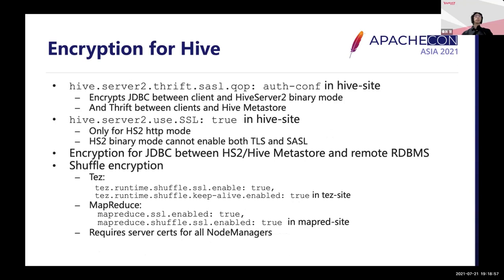Encryption for Hive workloads uses both TLS and SSL encryption through the client to state store. SSL protocol secures the JDBC connection between client and HiveServer2 in binary mode, and Thrift protocol between client and Hive Metastore. If HiveServer2 uses HTTP mode, TLS encryption is used instead. Another JDBC connection between HiveServer2 or Hive Metastore and a remote RDBMS like MySQL is also preferred to be encrypted. Shuffle in execution engines uses TLS as encryption, requiring various service certificates for all node managers.